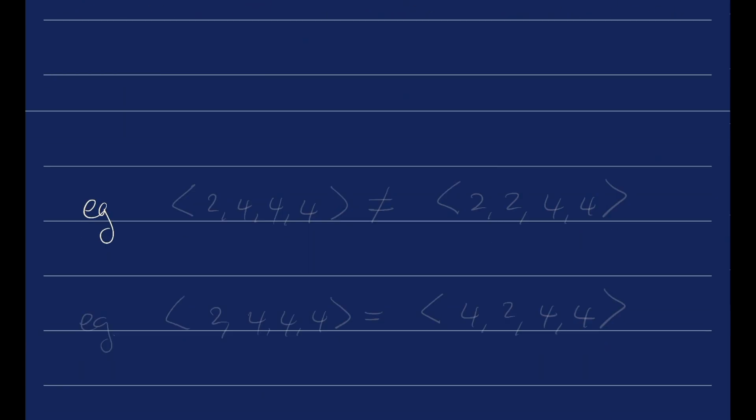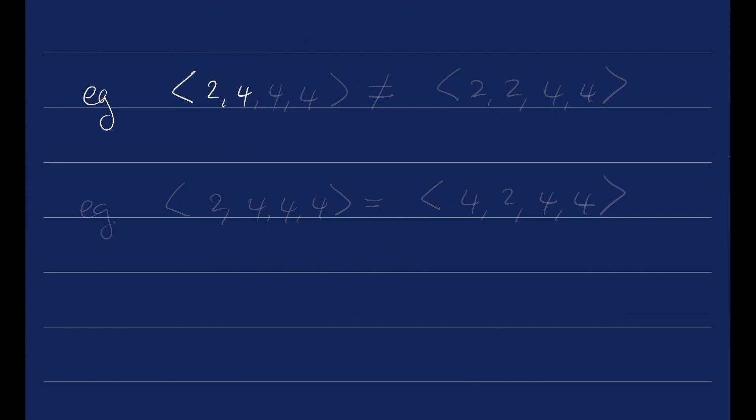Let's do a couple of examples. This multi-set 2, 4, 4, 4 is not equal to 2, 2, 4, 4. Same elements, different multiplicities.